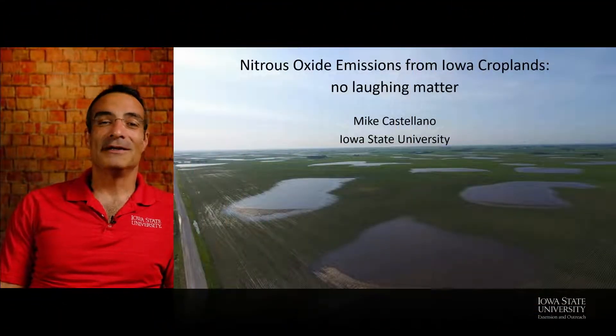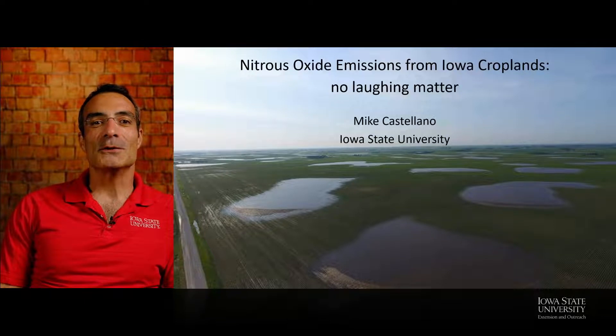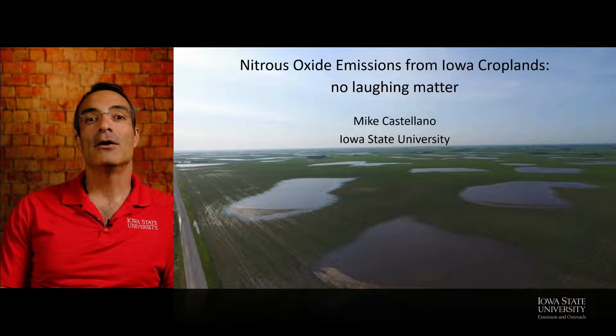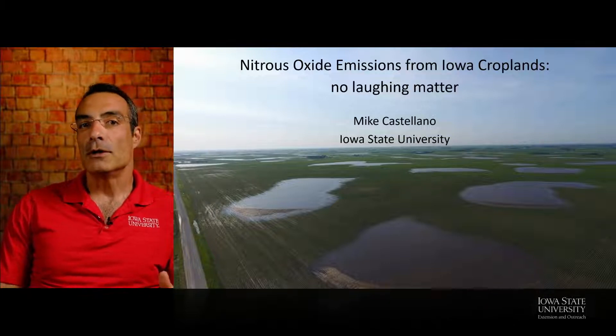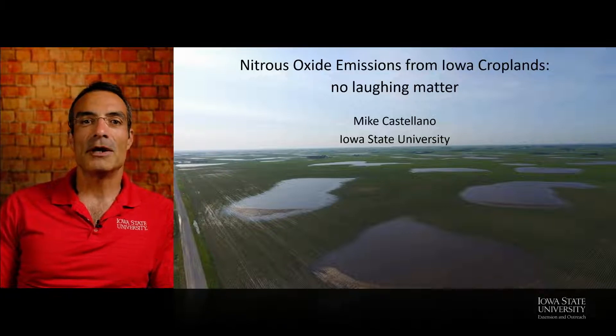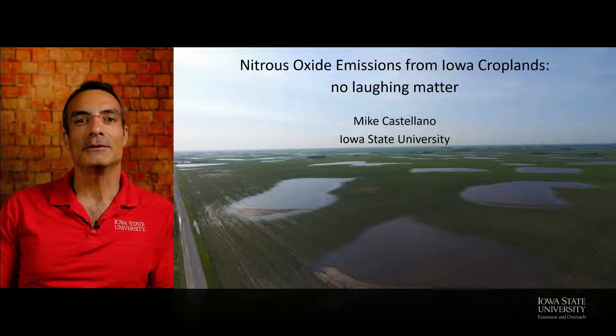Thanks for joining me today. We're going to talk about nitrous oxide emissions from Iowa croplands — no laughing matter. Our croplands emit large amounts of nitrous oxide, just like you might get at the dentist. But nitrous oxide is also an enormous greenhouse gas and actually the biggest greenhouse gas emission from Iowa croplands, which are the biggest contributor of net greenhouse gas emissions from the state. We're going to understand what forces nitrous oxide emissions from our cropping system and how they compare to other emissions from the system.